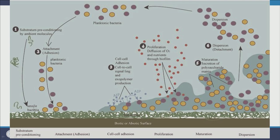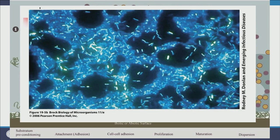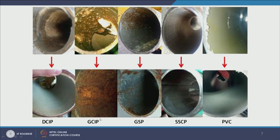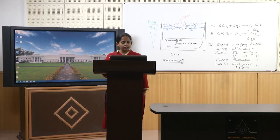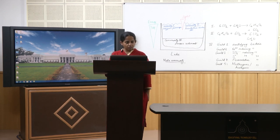Microbial attachment occurs even on stainless steel surfaces — fluorescence microscopy images show microbes attached to stainless steel backgrounds. Different pipe materials including PVC and various metals show biofilm development that aids in corrosion. Another example of biofilms is dental plaque — biofilms form on our teeth as well.